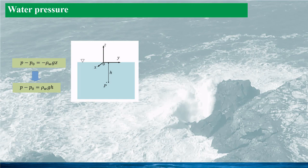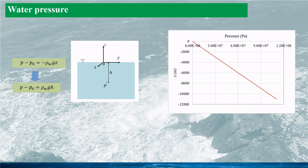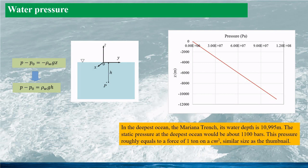The pressure in water can be simply calculated as P = P₀ + ρgH, where pressure is proportional to water depth H. At the Mariana Trench — the deepest ocean at 10,995 meters — the static pressure would be approximately 100 million Pa, about 1,100 bars. The pressure force on a square centimeter at that depth exceeds 1 tonne, and on a square meter, it would be more than 10,000 tonnes. This illustrates the enormous pressure forces acting on any structure diving in the deepest ocean.